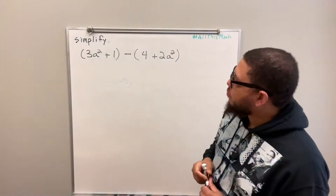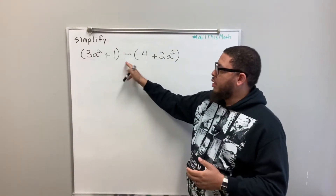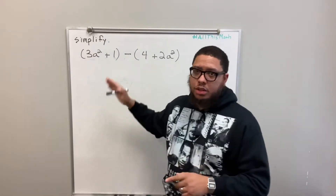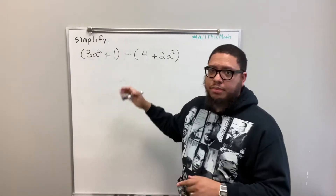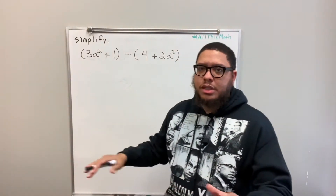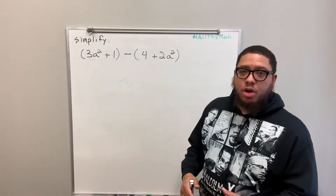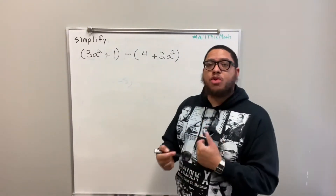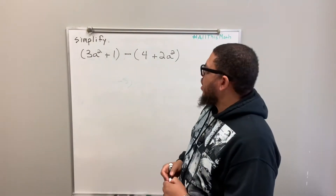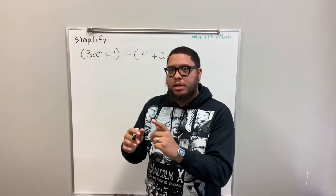Now, we're doing some subtraction here. The first thing we need to do in order to do this problem is we've got to get rid of the parentheses. The parentheses got to go. Now, there's a specific way that we do that, depending upon what sign is in front of each quantity.